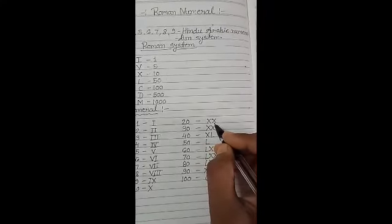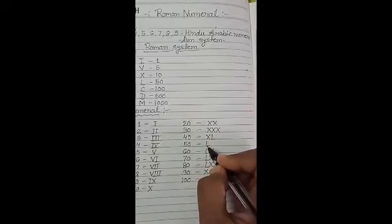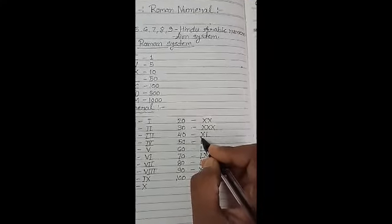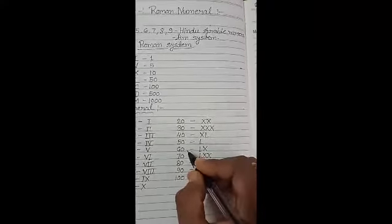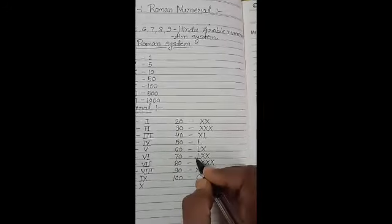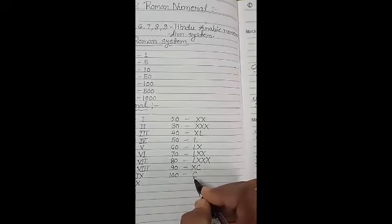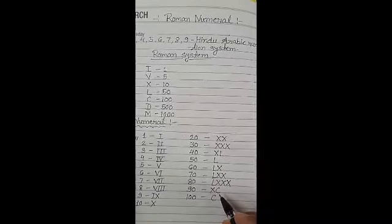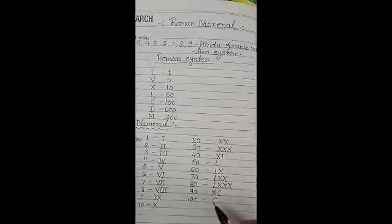So, 20 will be XX, 30 is XXX and 50 is L. So, 40 is XL because 40 is 50 minus 10. So, 40 is XL and 60 is LX means 50 plus 10. 70 is LXX, 80 is LXXX and 100 is C. So, 90 is XC means 100 minus 10, 90. So, 90 is XC and 100 is C.